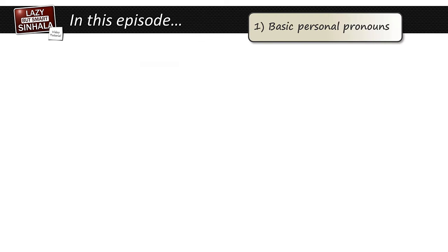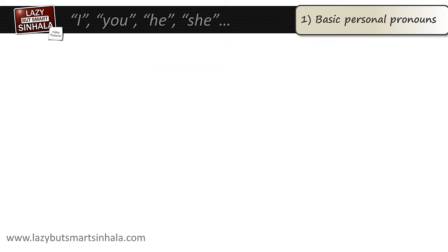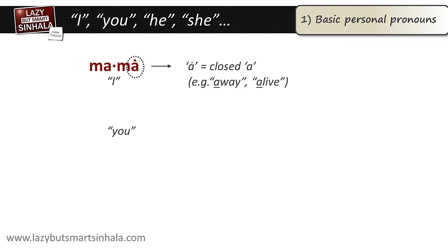Section 1: Basic Personal Pronouns. The word for 'I' is mama. It sounds like 'mama' but with a closed 'a' at the end — a closed 'a', which I indicate with a dot, is the 'a' you'd use when you say words like 'away' or 'alive.' So the word for 'I' is pronounced mama.